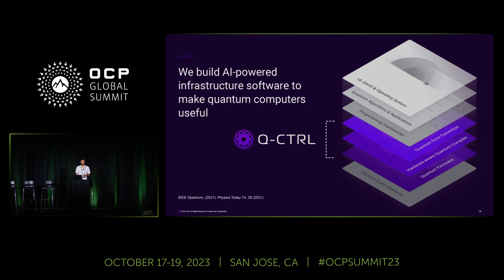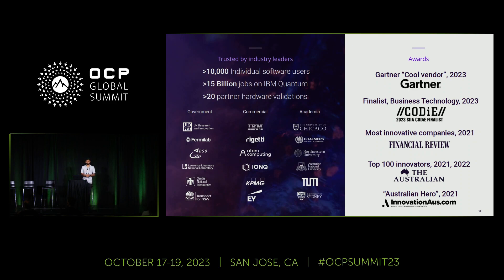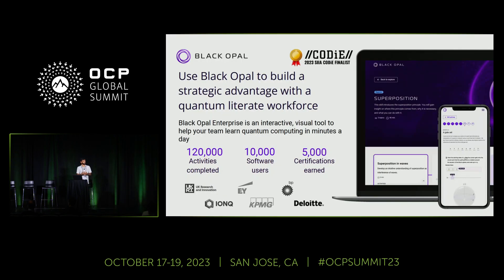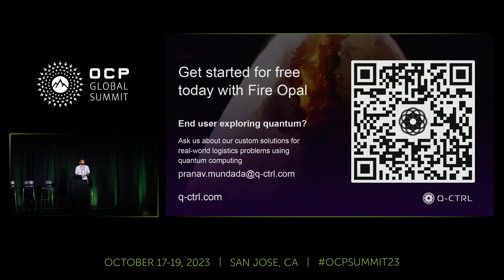Q-Control is a middleware provider going all the way from quantum firmware level to error correction, connecting to user applications. We've received a lot of awards and run over 15 billion jobs on IBM quantum systems — almost 16 billion now. Our products are used by various commercial, academic, and government entities. As a call to action, we also have a product called Black Opal, which is kind of like Duolingo for quantum — if you want to get started in a non-equation form to build intuition, that's a great place to start. Let me know if you have any questions.